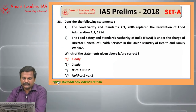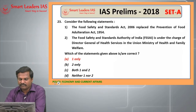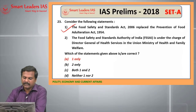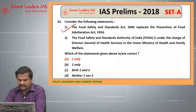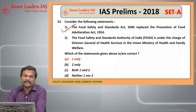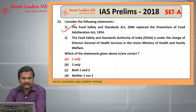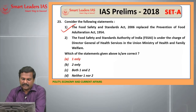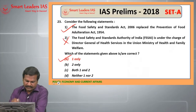Next question: the Food Safety and Standards Act 2006 replaced the Prevention of Food Adulteration Act 1954 — this is a right statement. The Food Safety Standards Authority is under the charge of a chairperson, not under the charge of the Director General of Health Services. So this is under the chairperson, and hence the answer is A, 1 only.